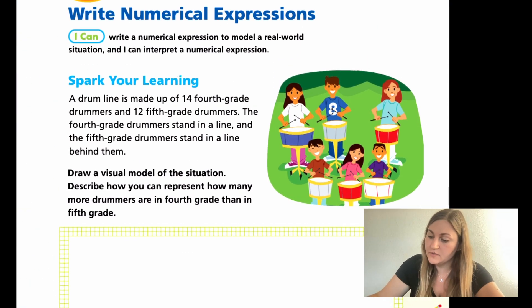Now, jumping into the lesson, it starts with a word problem that says, a drum line is made up of 14 4th grade drummers and 12 5th grade drummers. The 4th grade drummers stand in a line, and the 5th grade drummers stand in a line behind them. Draw a visual model of the situation. Describe how you can represent how many more drummers are in 4th grade than in 5th grade. Okay, so we're going to draw, and then we're going to explain what's going on.